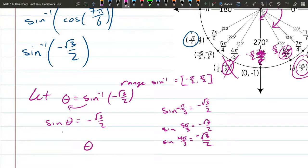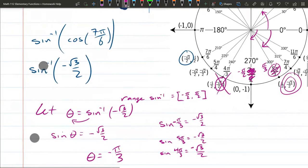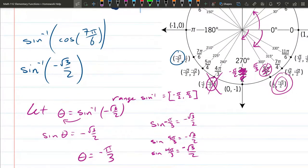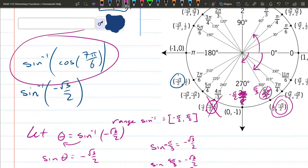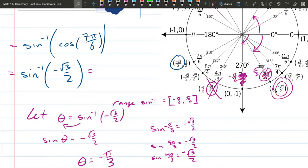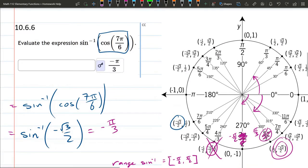So θ equals negative π over 3, and somewhere up here we're ready to make that substitution. Actually, I think we're done, because this is what we started with. It's equal to this, and we just said that sine inverse of negative square root 3 over 2 is negative π over 3. And that hopefully will be what we see right there, negative π over 3.